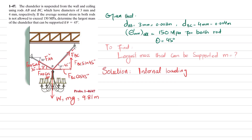We apply the first equilibrium condition: the sum of all forces along the x-direction equals zero. Forces in the positive direction: F_BC·cos(45°) is positive, minus F_AB·cos(30°). This gives equation number one.